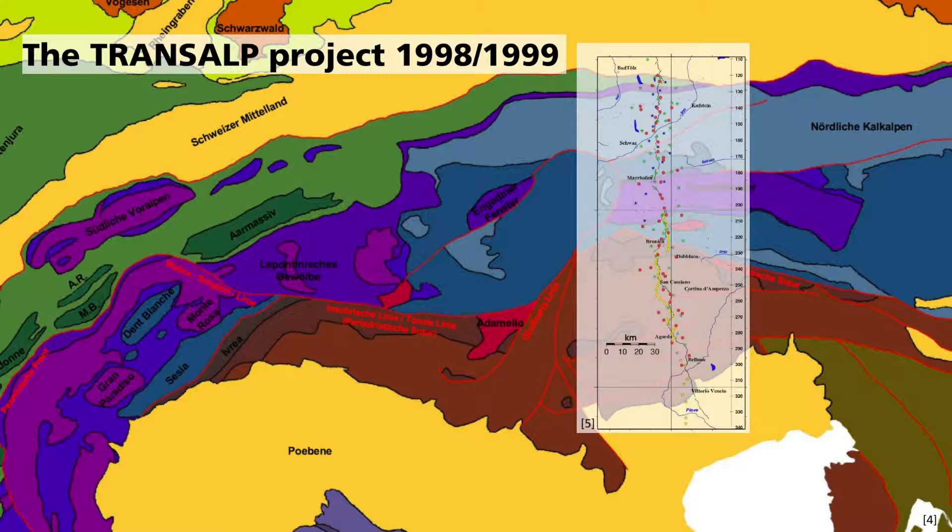The scientists initially carried out reflection seismic measurements with almost vertical ray paths over the entire profile. In addition, other geophysical and seismic methods were also used, including those of wide-angle seismics.